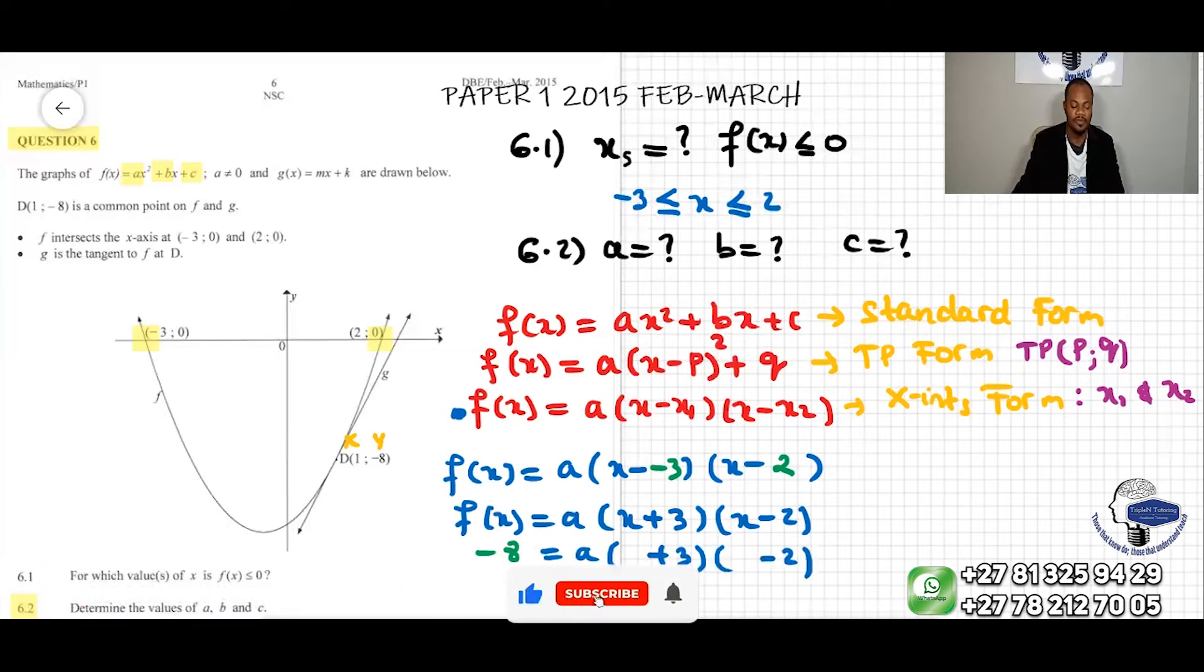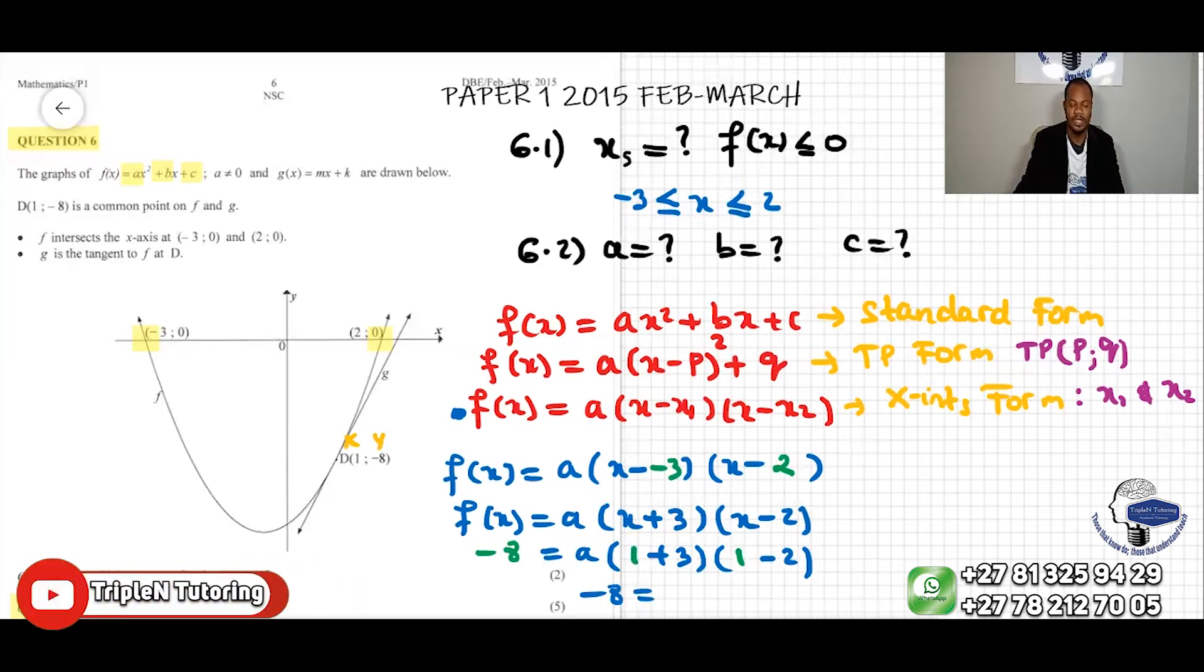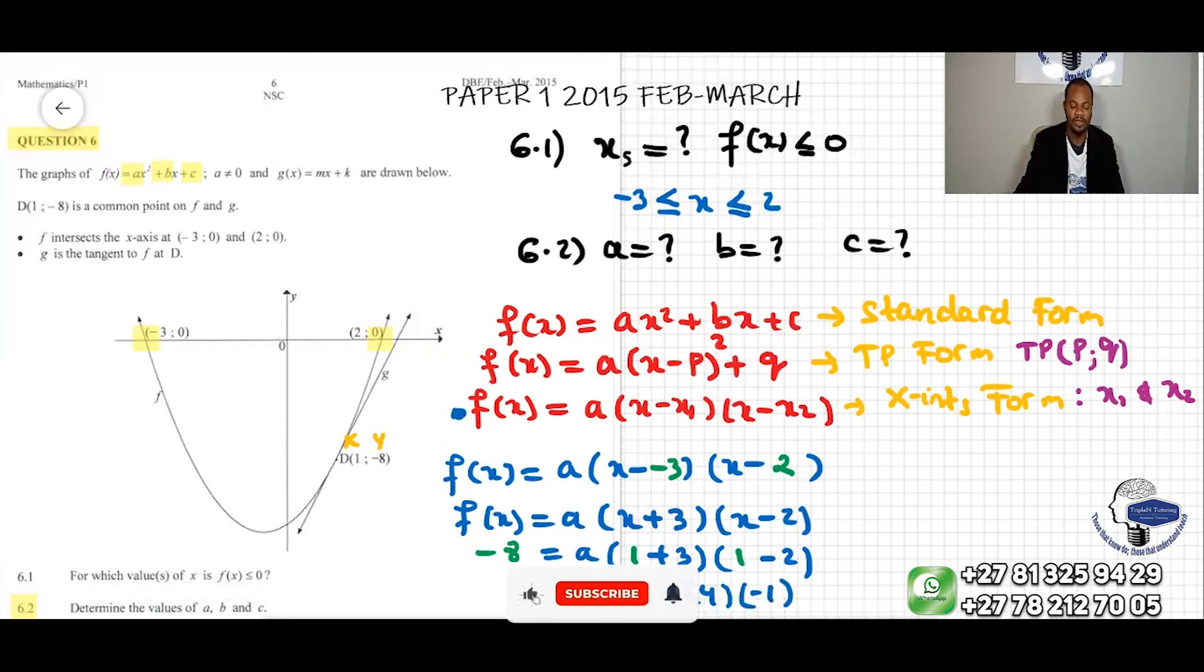That makes -8 equal to, because 1 plus 3 makes 4, and then 1 minus 2 makes -1. So here we have a times 4 times -1.